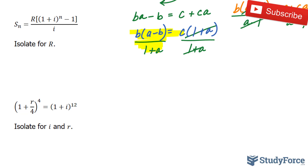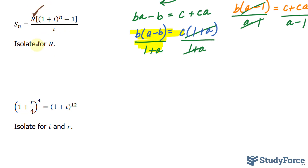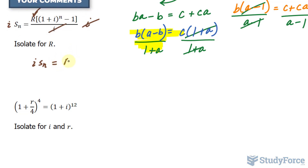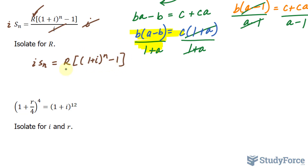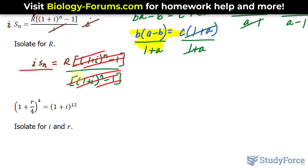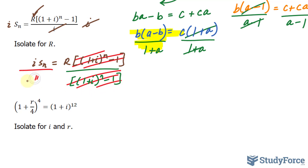In this equation, they want us to find out what r is equal to. Since r is my target, I can multiply both sides by i. Remember, this is a fraction and we don't like to work with fractions. By multiplying both sides by the common denominator i, this i and this i cancel out, leaving us with i times S sub n. By the way, this sub n — the n part — isn't a variable, so you'll never be asked to isolate for it. This is equal to r times the bracket 1 plus i raised to the power of n minus 1. Notice that r is a factor being multiplied to this big factor. Dividing both sides by that big factor cancels it out, leaving you with r is equal to i times S sub n over that big factor.